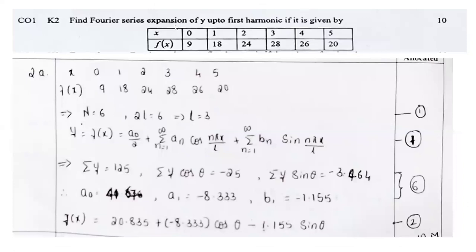Now, another question. The Fourier series expansion of y up to the first harmonics — a table is given. The first row contains the value of x, and the second row contains the value of the function f(x). You have to compute the Fourier series expansion for y up to the first harmonics. Note the given table data.